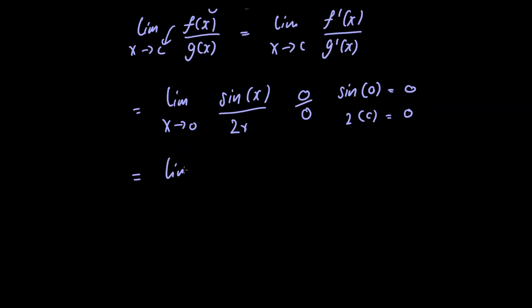Doing so gives us the limit as x approaches 0 of cos(x)/2. Cos(0) is just equal to 1, and as there's no x variable in the denominator, we would just have 2 in the denominator. So our final answer is 1/2.